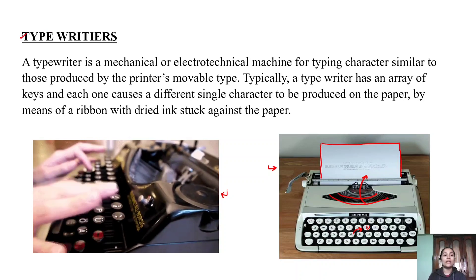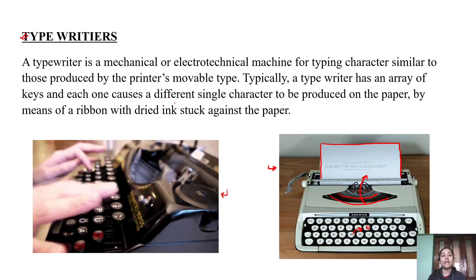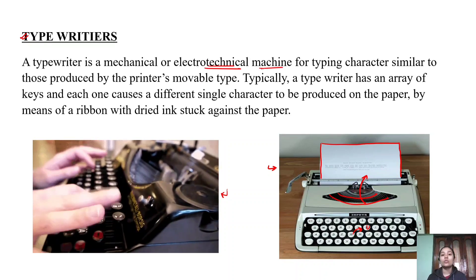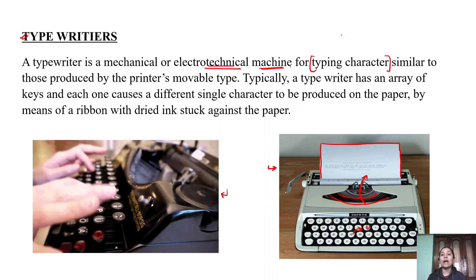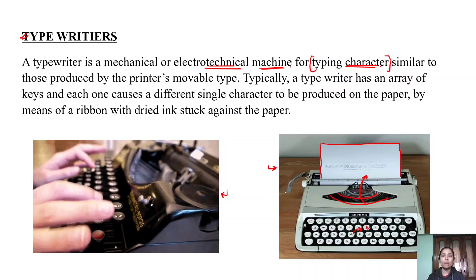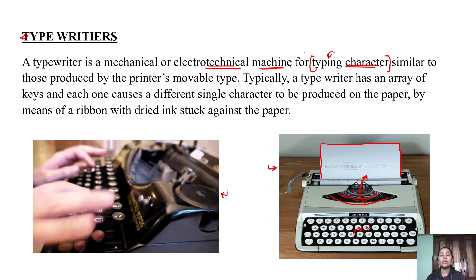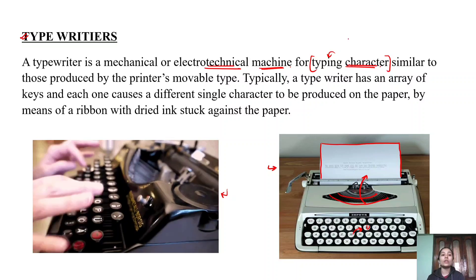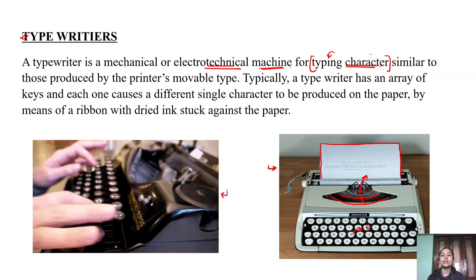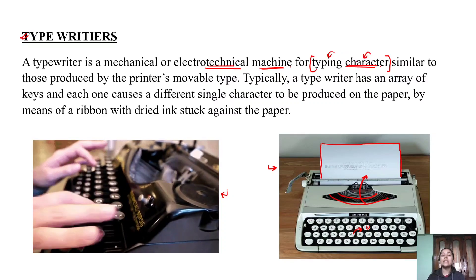A typewriter is a mechanical and electro-technical machine for typing characters — alphabets and numbers. If you want to generate a document, it will be a machine-generated document, not computer-generated. It is a mechanical and electro-technical machine which types characters directly onto the page.